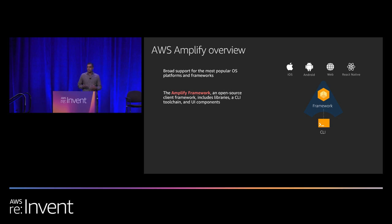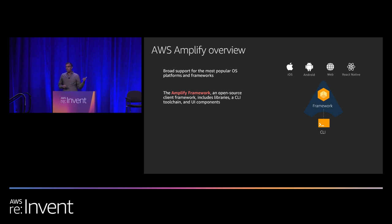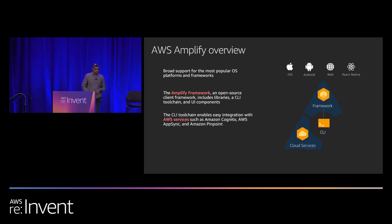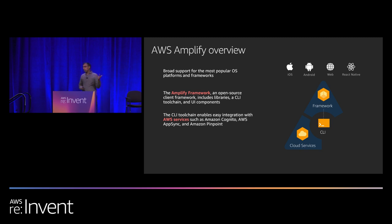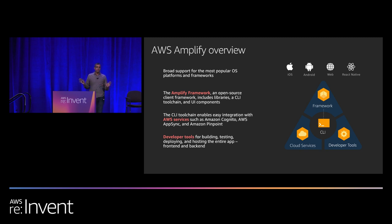The Amplify framework is the open-source part, which includes libraries, a CLI toolchain, and UI components. A key design tenet is for these things to be use-case-focused instead of service-focused. For example, instead of saying 'Amplify add Cognito,' you say 'Amplify add Auth,' and we walk you through a Q&A session to configure the underlying cloud services. Both libraries and the CLI toolchain work on top of AWS services — auth powered by Cognito, for example. We also have the Amplify Console, which supports the entire lifecycle of building, testing, deploying, and hosting the entire app, front-end plus back-end.